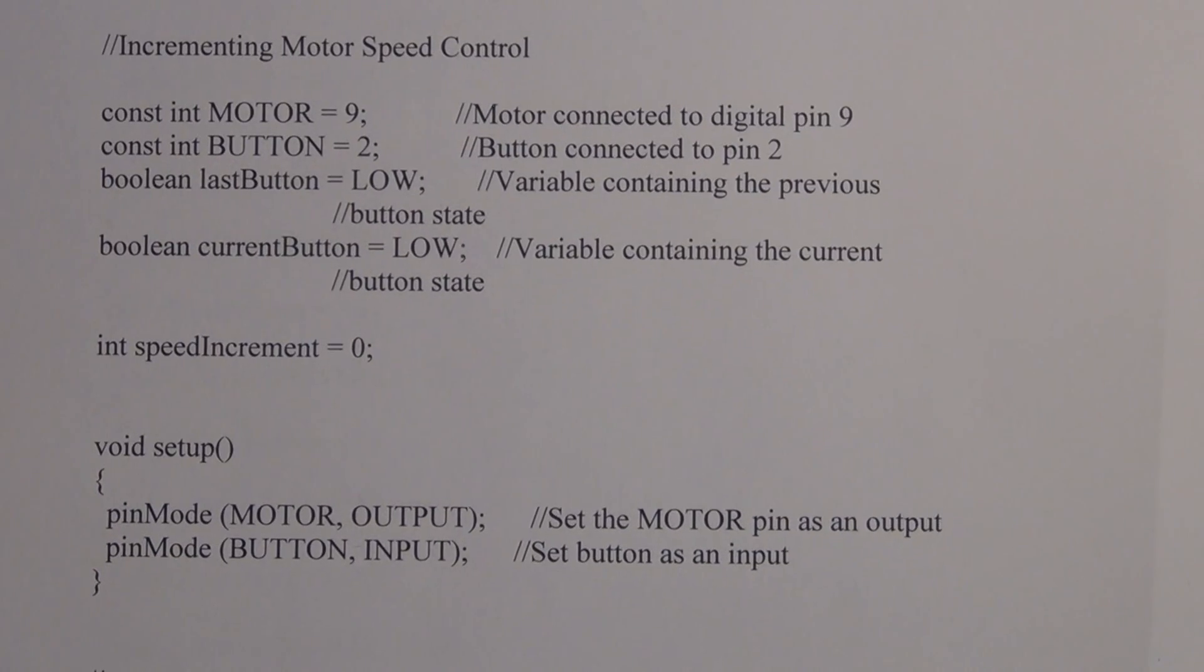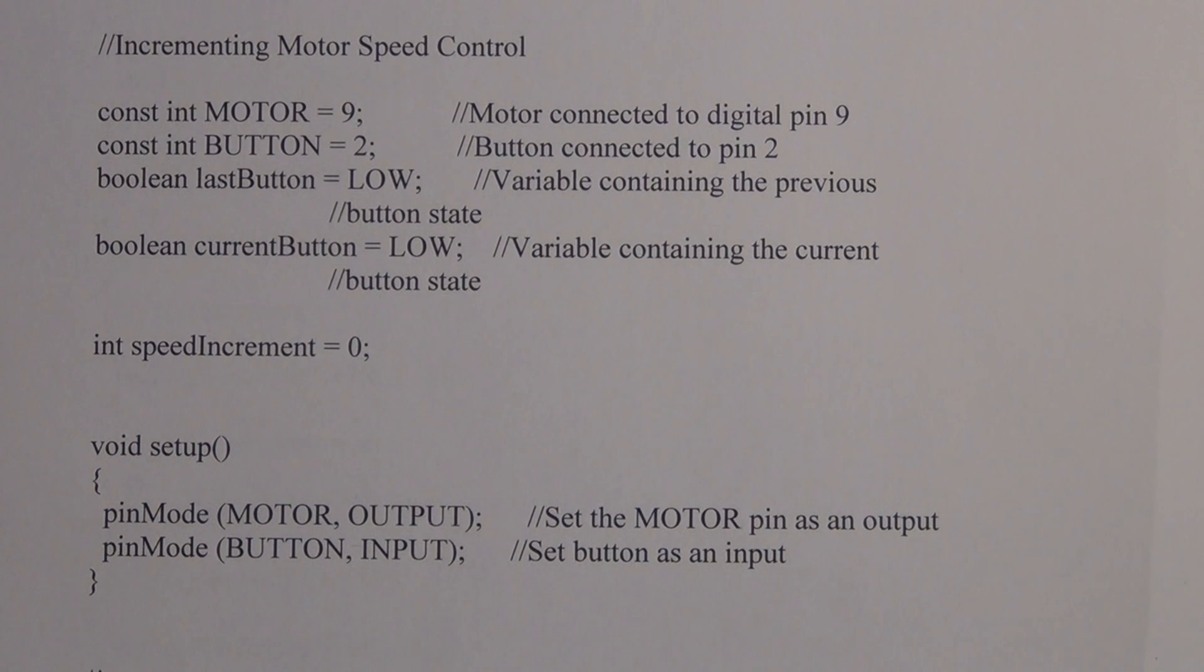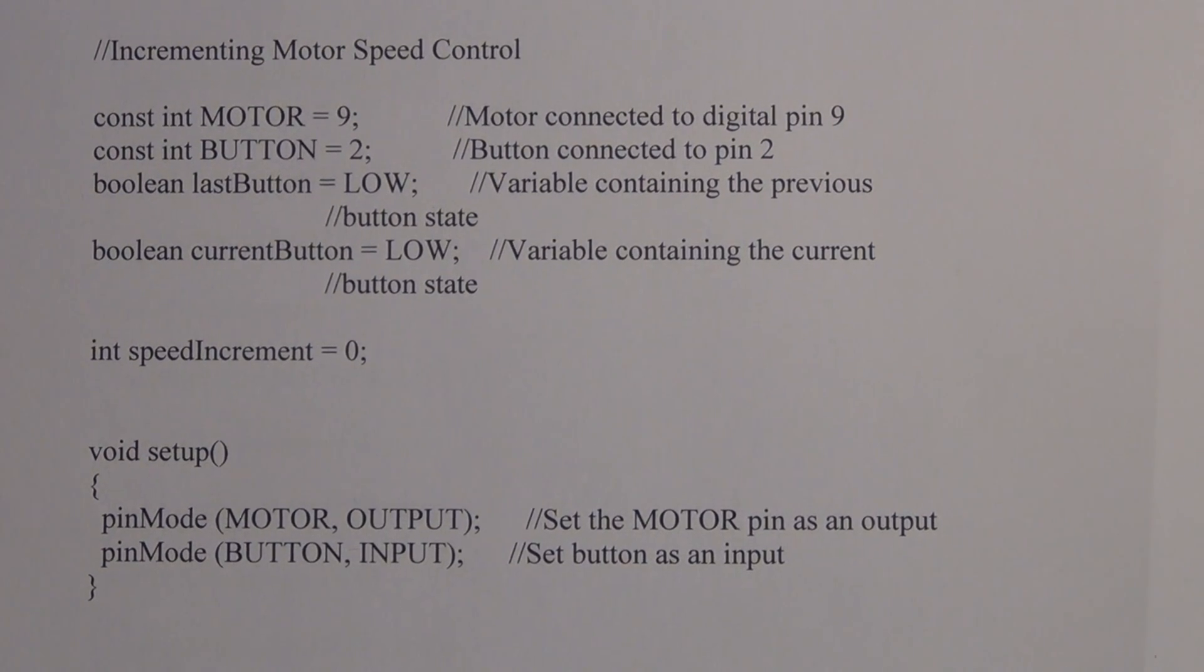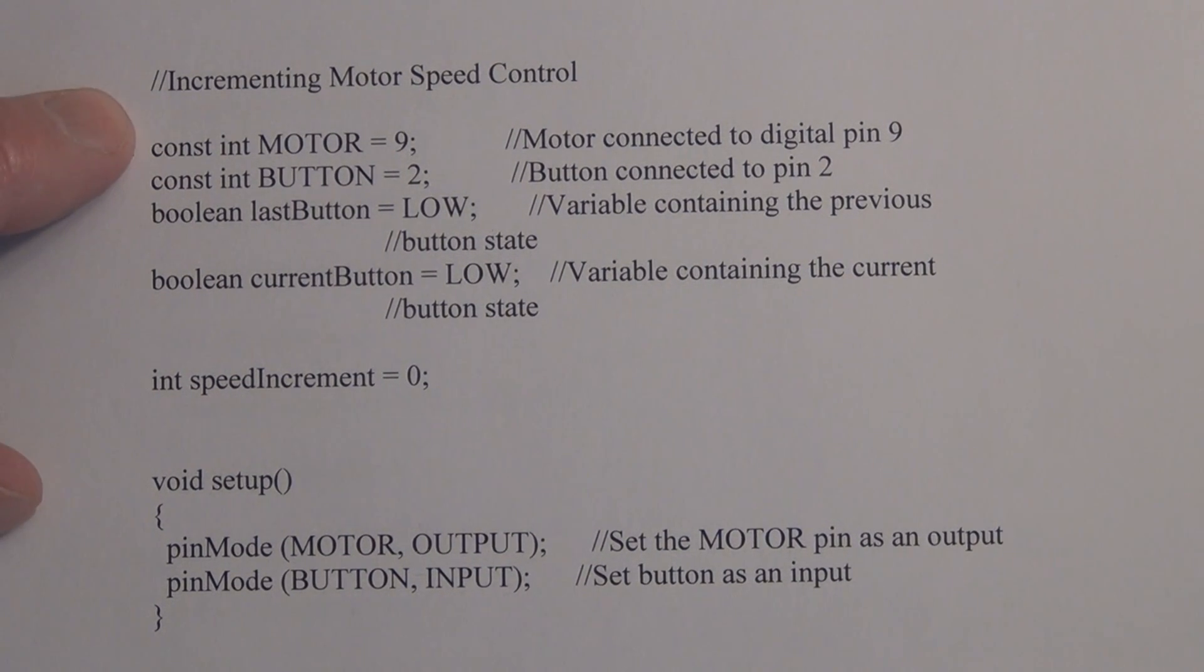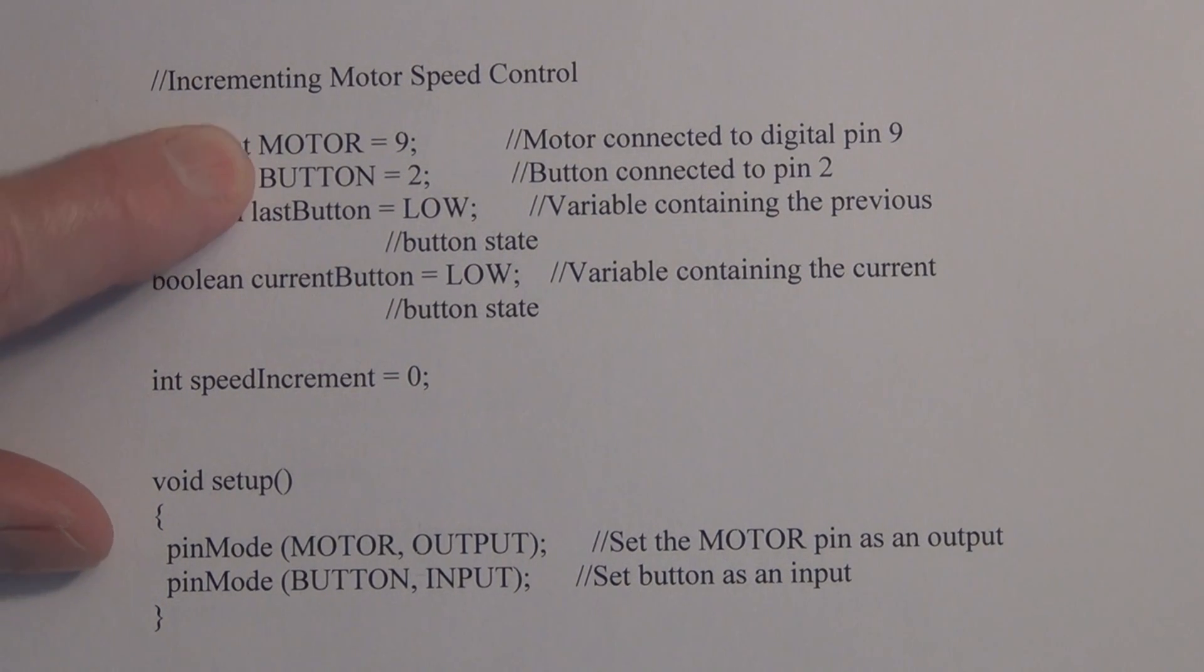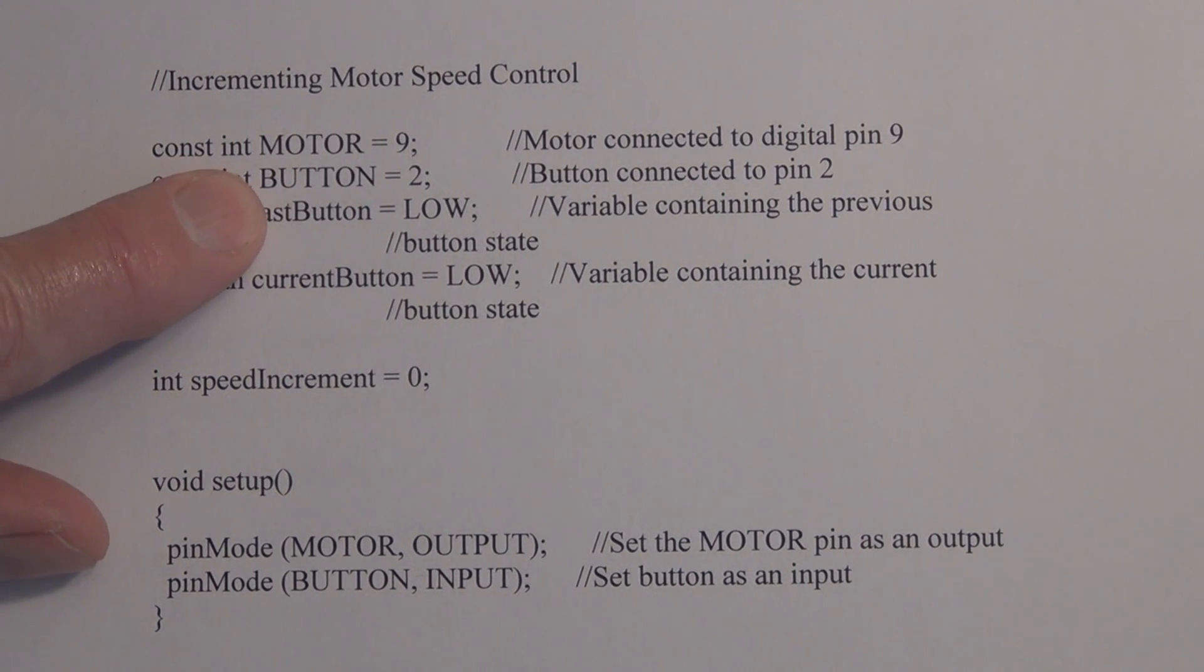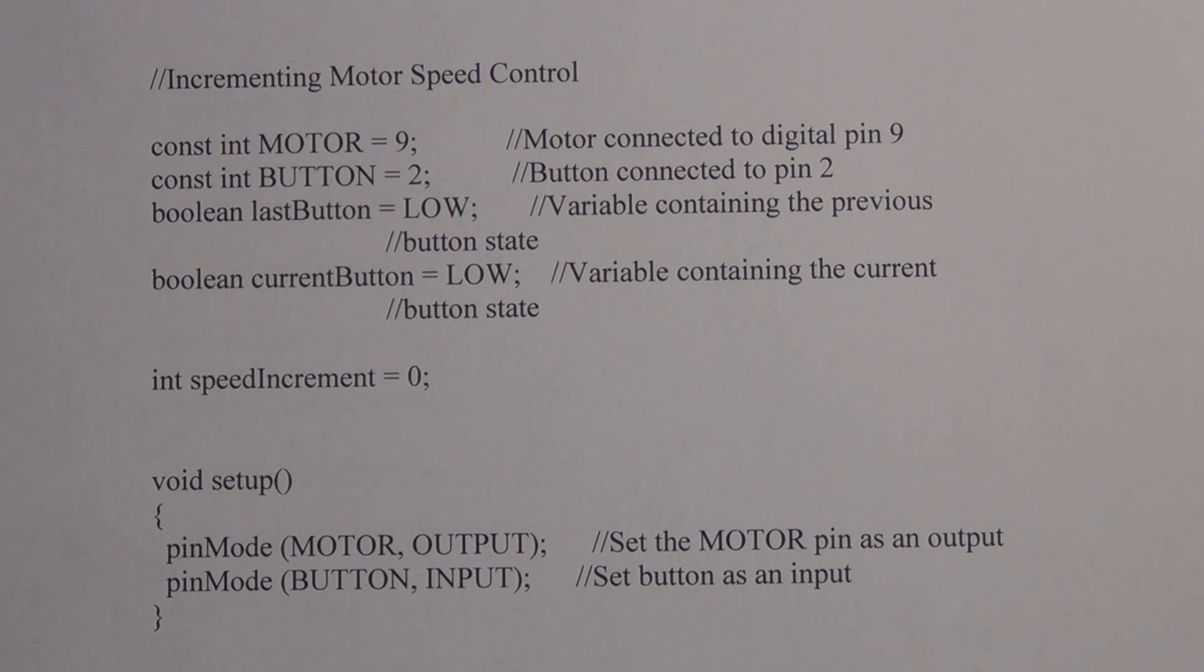So again, I'll paste this into the first comment on this video. I found that that has a lot of room. I don't know if it's the same for the description. So incrementing motor speed control, I'm declaring these two variables associated with motor with pin 9 and the button with pin 2, just like the previous one with being able to detect the transition from the 0 volts to the 5 volts.